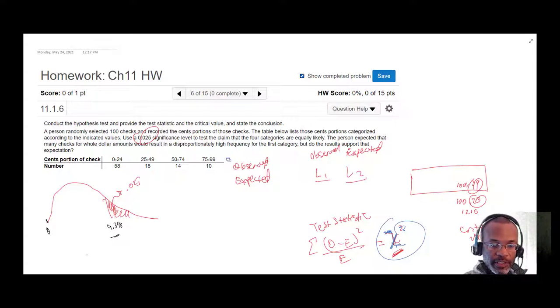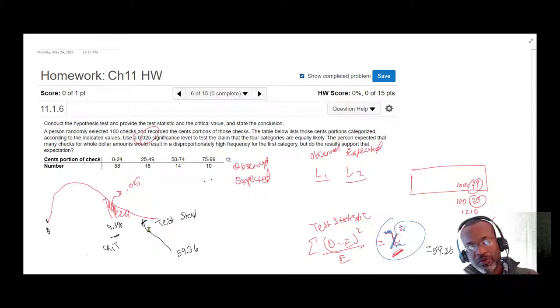So our test statistic, we'll put over here, equals 59.36. And since it's larger than our critical value—we'll put over here it's larger than our test statistic—59.36, so with that we're going to reject the null hypothesis.